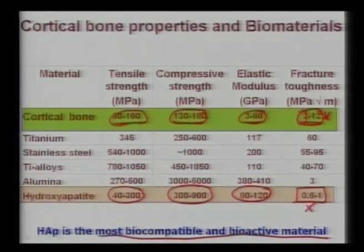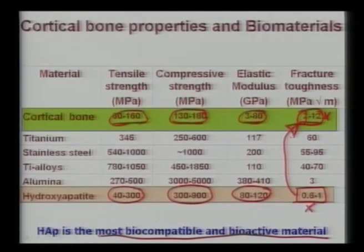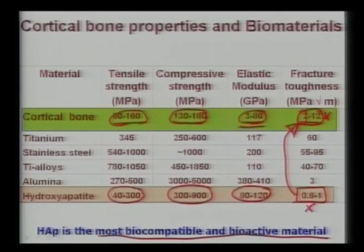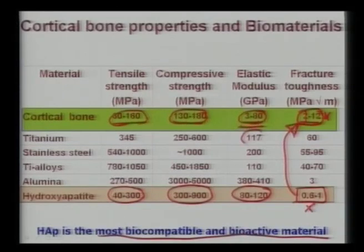The second important point is elastic modulus. For all synthetic metals, elastic modulus needs to be tuned to between 3–80 GPa to match the cortical bone. If the elastic modulus is very high, the material will carry most of the load instead of the natural tissue surrounding the synthetic material. For example, titanium has an elastic modulus of 117 GPa, stainless steel is 200 GPa, titanium alloys around 110 GPa, and alumina is very high at around 400 GPa.